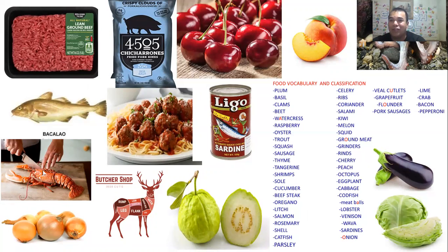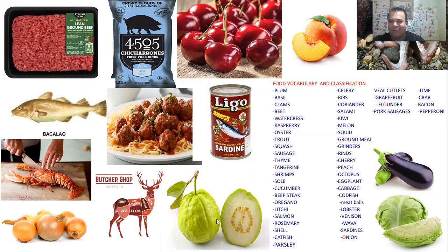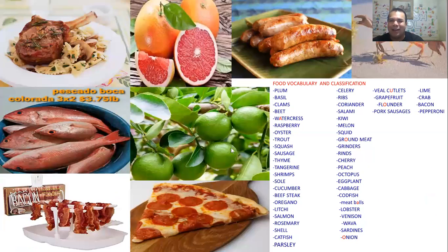Lobster — a little bit bigger than shrimps, and it's seafood. Venison — it's meat coming from the deer. We don't say deer meat, we say venison. Guava — very delicious when you eat it with salt and lemon. Sardines — some people hate them, others just eat them raw. Onions — very delicious especially when you fry them for onion rings.